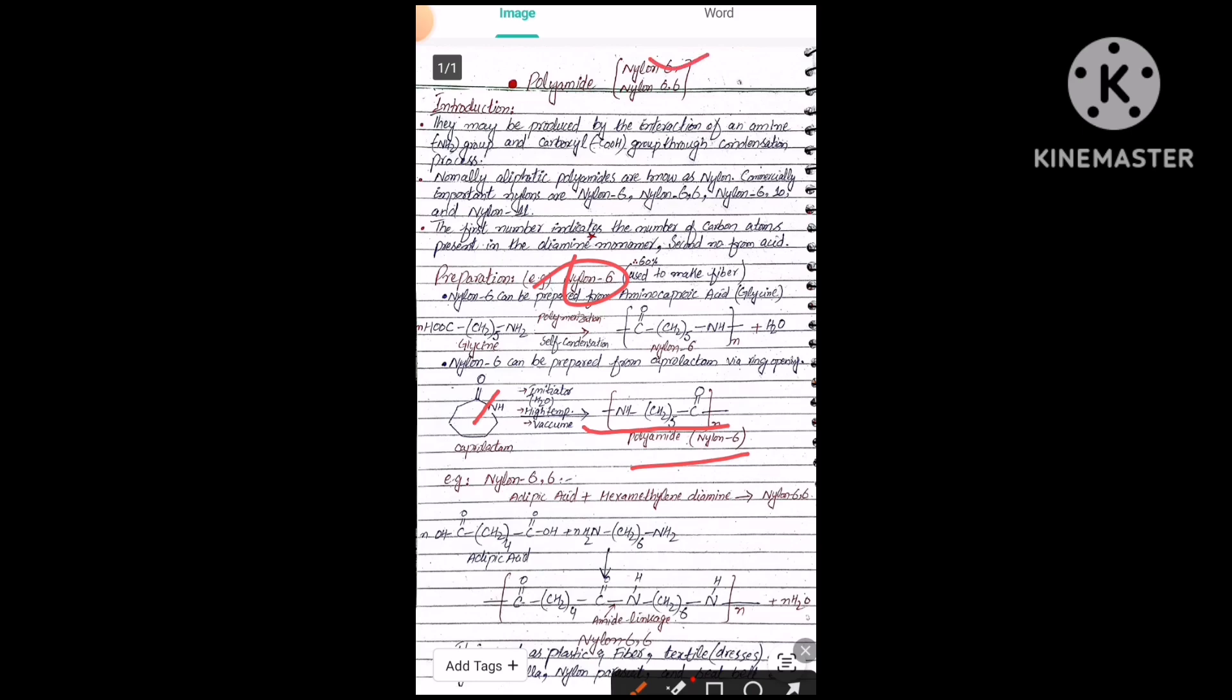Second example is nylon 6-6. For the preparation of nylon 6-6, two monomers are present. One is adipic acid and the other is hexamethylene diamine. When they polymerize, they condense to form nylon 6-6. Here is adipic acid.